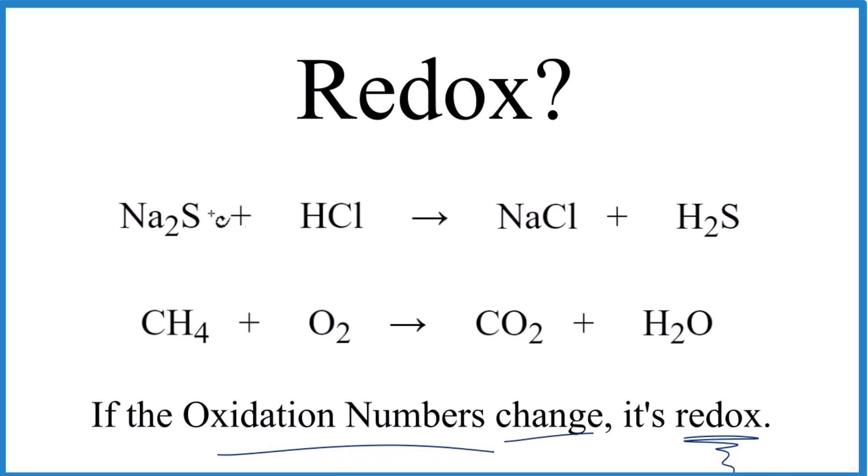So let me write in the oxidation numbers for each element here, and we're not going to worry about whether the equations are balanced or even the subscripts. All we want to do is see whether the oxidation numbers have changed between the products and the reactants. So pause and see if you can figure out which one of these reactions is a redox reaction.